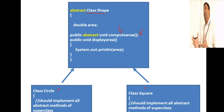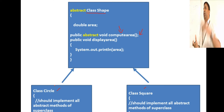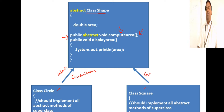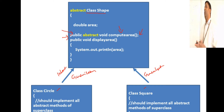For a circle, you can say what the area is. For a square, you can say what the area is. But for a shape, you cannot really define what area is. So in that case, compute area becomes an abstract method. A circle inherits — there is a generalization relationship here. It is mandatory that you provide the definition for compute area in your derived classes.